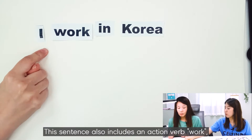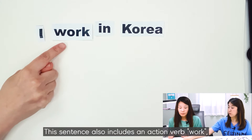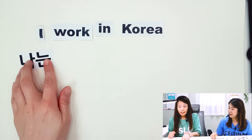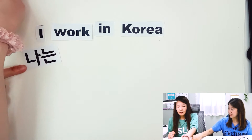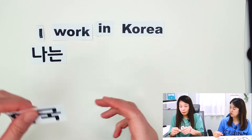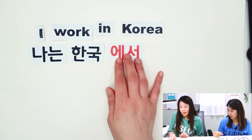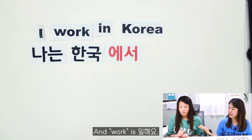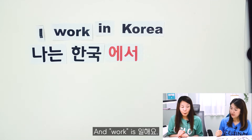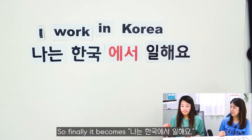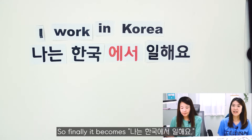Then let's see 'I work in Korea.' This sentence also includes an action verb 'work', so we need 에서. 나는 한국에서. And 'work' is 일해요. So finally it becomes 나는 한국에서 일해요.